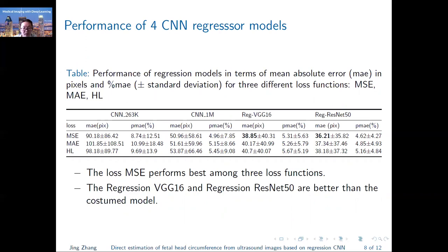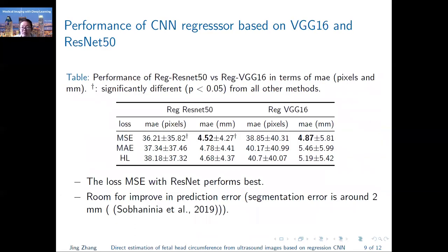For the experiment results, this table shows the performance of four different regression models under three different loss functions. We can see that the VGG and ResNet-based regression models are better than the customized models. This table shows the predicted results both in pixels level and millimeters level of VGG and ResNet models. We can see that the loss function MSE with ResNet performs the best, but there is still room for improvement in prediction error, because the segmentation error is around 2 millimeters while our prediction error is 4 millimeters.